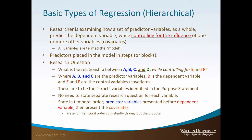Let's now shift to hierarchical regression analysis. The researcher is again examining how a set of predictive variables as a whole predict the dependent variable. However, in this case the researcher is seeking to control for the influence of one or more other variables, known as covariates. All variables are termed the model. Unlike standard regression where all predictors are placed in the model at one time, predictors for hierarchical regression are placed in the model in what are known as steps or blocks. We will examine this more closely in part two of the video.